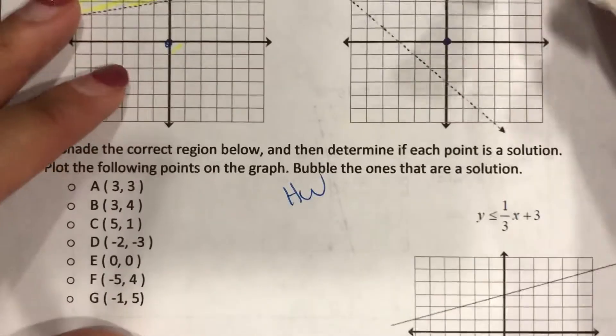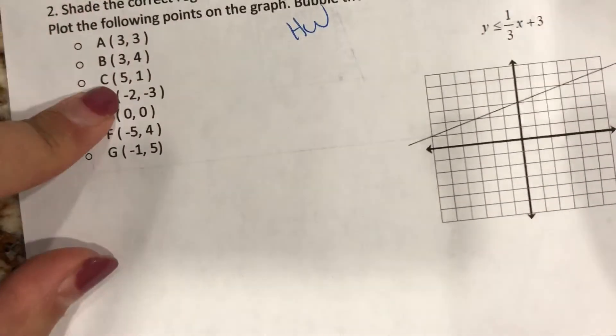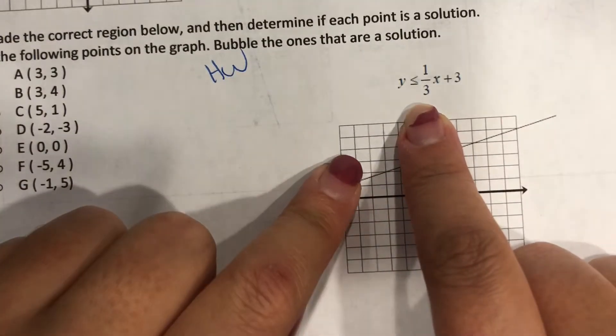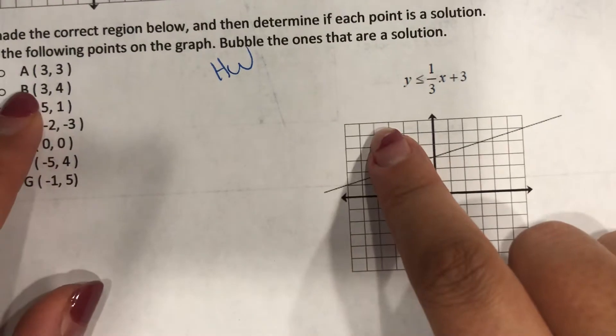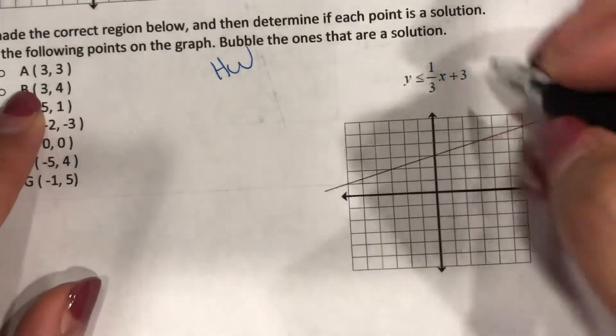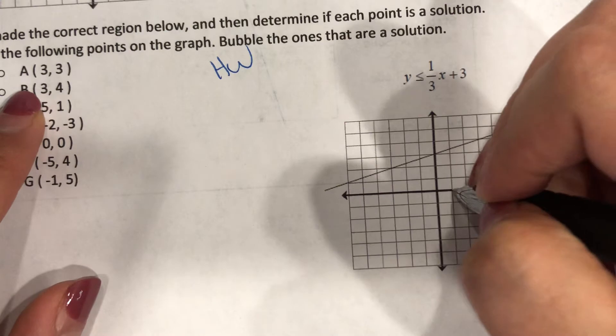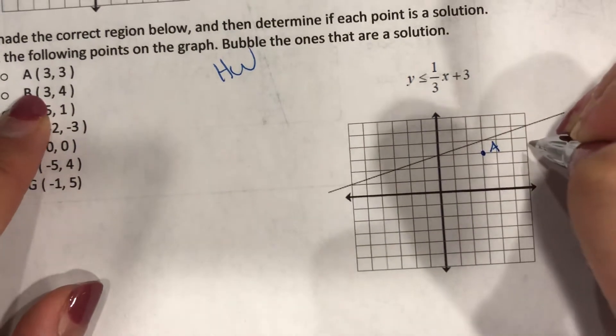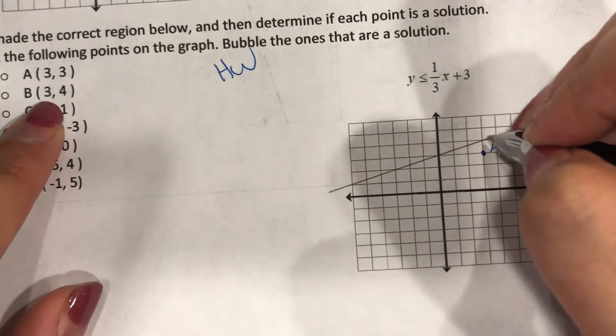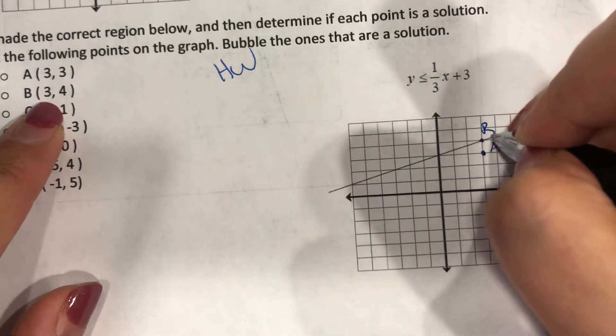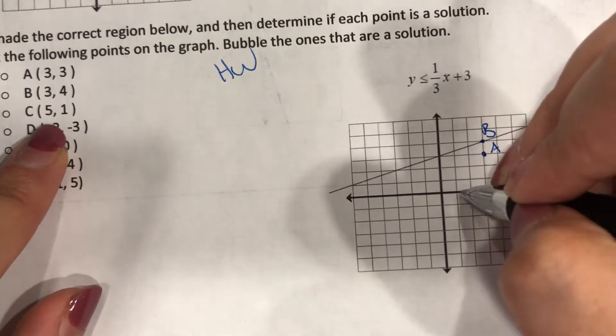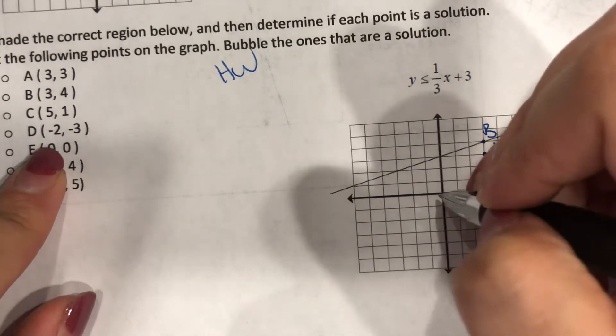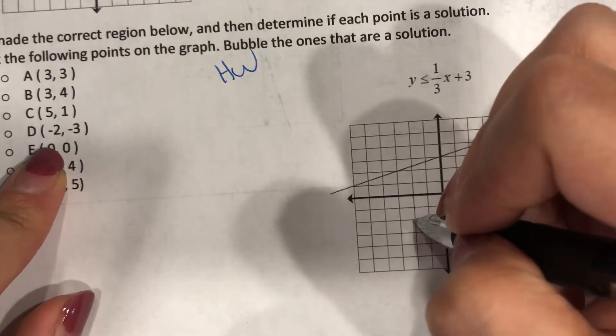All you're doing - first shade this. And then I want you guys to plot these points. So I want you to plot one, two, three, one, two, three - here's A. B is here. C - one, two, three, four, five, one. D - one, two, one, two, three.